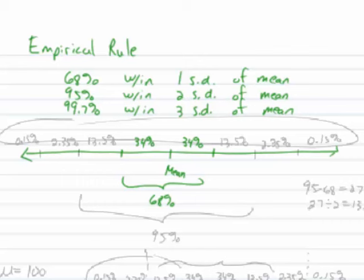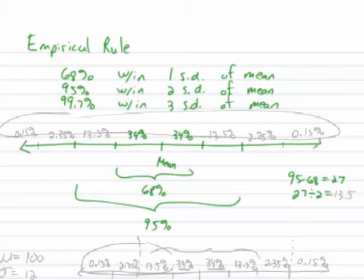Now if we go out another standard deviation in both directions, that's supposed to be 95%. The difference between 68 and 95 is 27%, and if I divide that by 2, I get 13.5% of the data in those two regions.